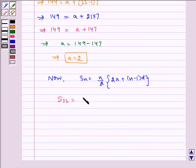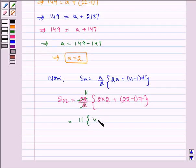So S_22 equals (22/2) multiplied by [2 times 2 plus (22 minus 1) times 7]. Now here we see that this and this gets cancelled by 11. So it equals 11 multiplied by (4 plus 21 times 7).